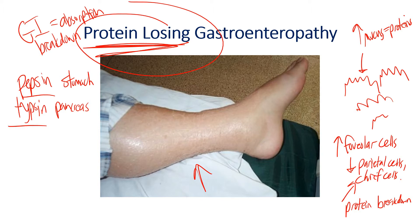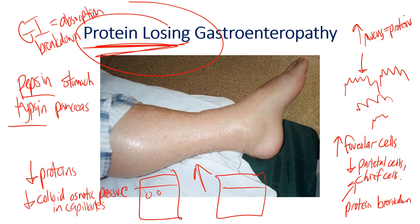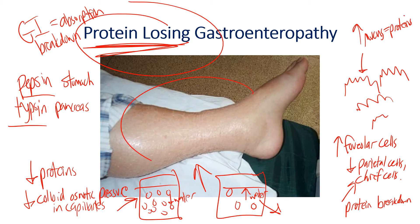So protein-losing gastroenteropathy — how does that present? We don't have enough proteins in the body, so decreased proteins means you're decreasing the colloid osmotic pressure in the blood and capillaries. When you decrease the solute concentration in the blood, there are fewer protein solutes, meaning there's relatively more water wanting to move out to balance concentrations. Because there are so few proteins circulating, you end up with interstitial swelling — and that's the edema that results.